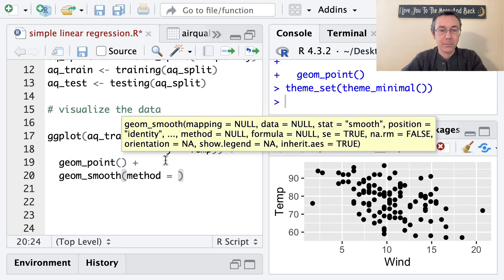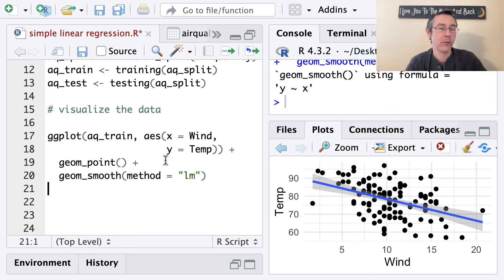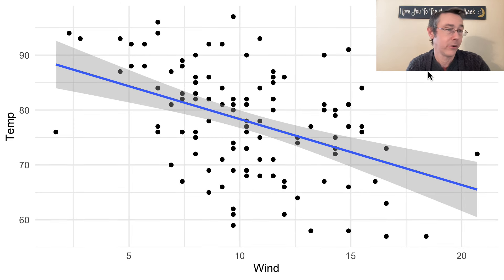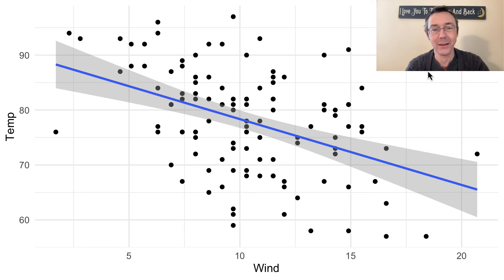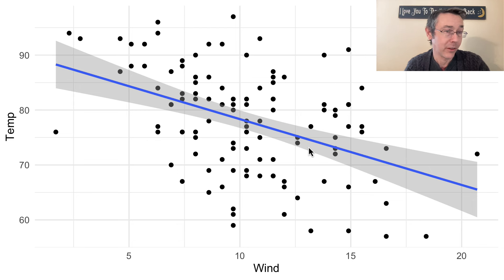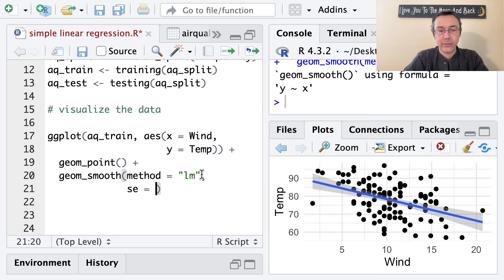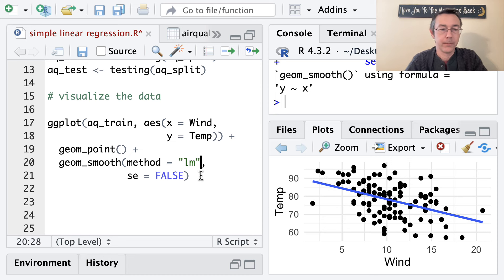Here we're seeing the line of best fit in blue, along with an error ribbon — a 95% confidence interval for the predicted mean for any given x value. I'll have a bit more to say about that later. If we want to remove it, we can add se equals FALSE to take that out.